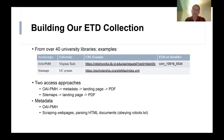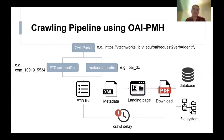Our ETD collections are obtained from over 40 university libraries using two access approaches. Early on, we downloaded the sitemaps, found the landing pages, and downloaded the PDFs. Later, we used OAI-PMH to obtain the metadata, where we could find the landing page URLs and download the PDFs. This diagram shows the crawling pipeline using OAI-PMH. From the OAI portal, we first identified ETDs and the metadata prefix, which gives us a list of ETDs where we can download the XML metadata and go to the landing pages to download the PDFs. The PDFs are saved in the file system and the metadata are stored in the database. We strictly followed the crawl delays in the robots.txt file.